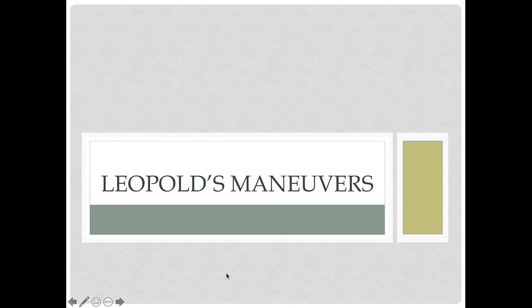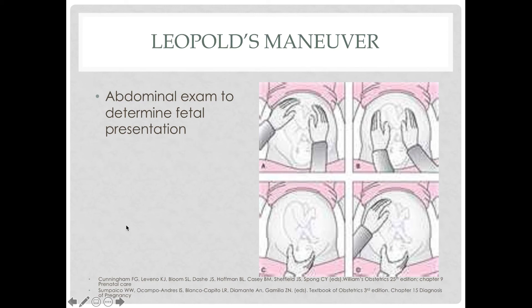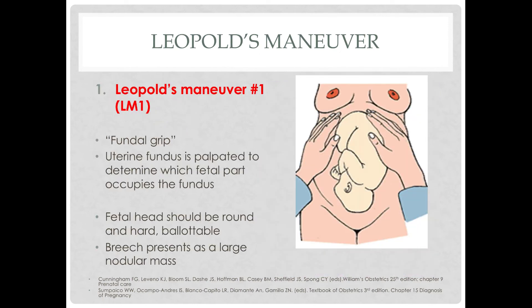Leopold's maneuver is an abdominal exam to determine fetal presentation. We have four types. Leopold's Maneuver 1 is the fundal grip — both hands are placed on the fundus of the uterus. The objective is to know which fetal part occupies the uterine fundus. If the examiner feels a round, hard, ballotable mass, the fetal head is likely in the fundus. However, if a large nodular mass is felt, we report LM1 as breech because the breech is situated in the uterine fundus.